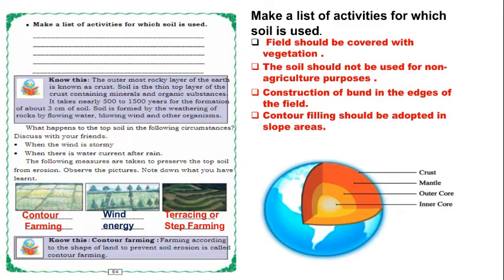The soil should not be used for non-agriculture purposes. Field should be covered with vegetation. Construction of bunds at the edges of the field and contour filling should be adopted in slope areas. The outermost rocky layer of the earth is known as the crust. Above the crust we can see the soil. Soil is the thin top layer of the crust containing minerals and organic substances. It takes nearly 500 to 1,500 years for the formation of about 3 cm of soil. The next layers of earth are the mantle, outer core, and innermost layer — the inner core.